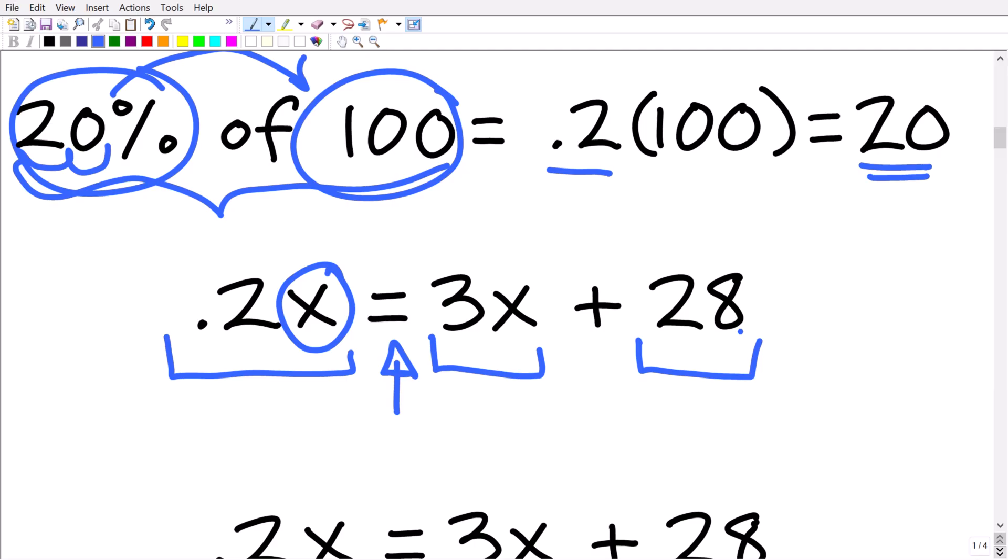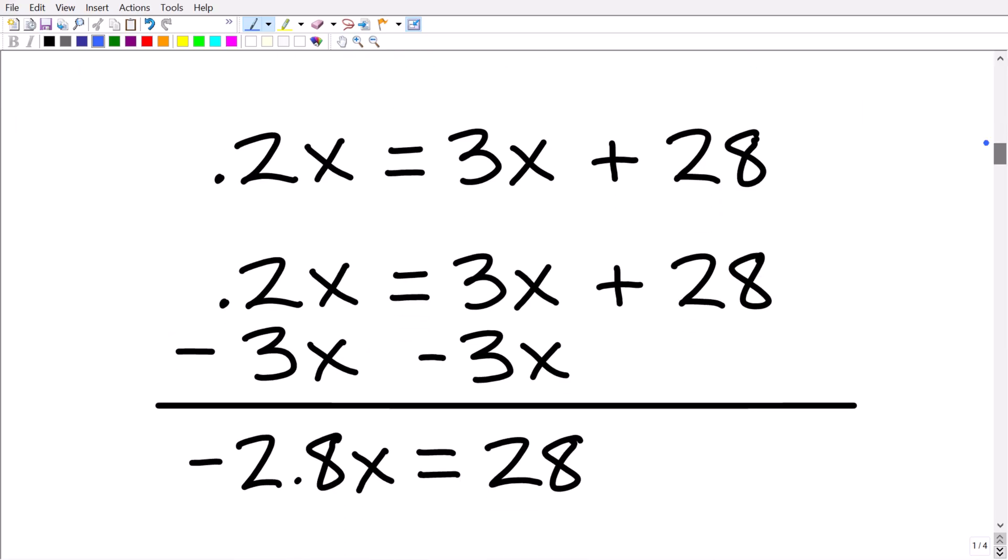Now, if you want to give this a try, I think that is a good idea. And if you think you have the answer, go ahead and put that into the comment section. But let's continue on here. So now that we know that 0.2x is equal to 3x plus 28 is the algebraic equivalent of our problem, right? So 20% of a number x is equal to three times that number plus 28. All we have to do here is solve for the variable x.